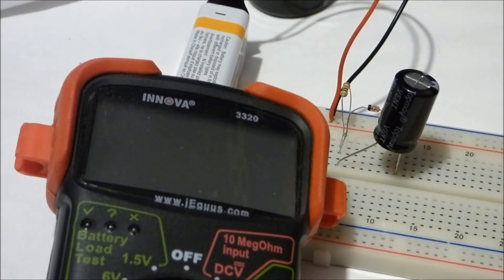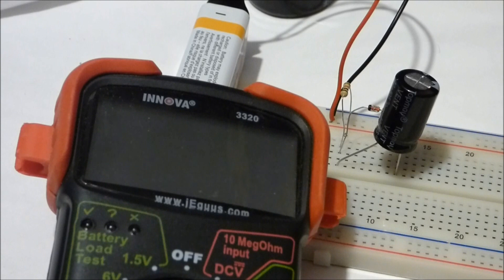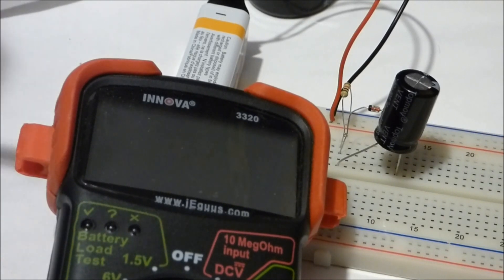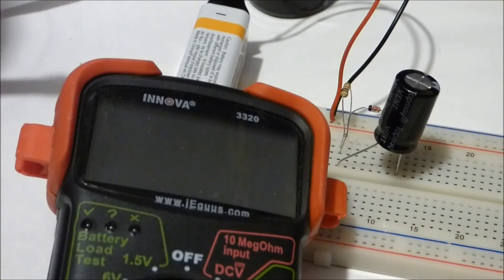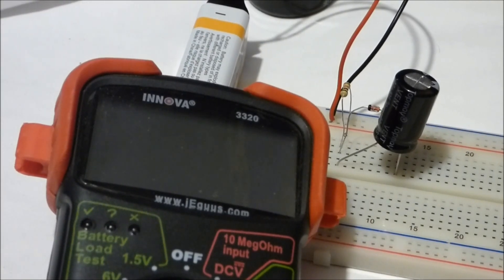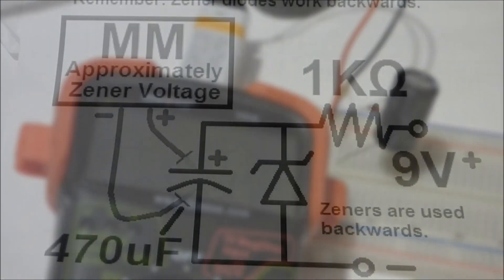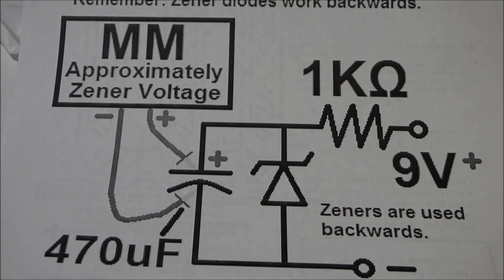So right now all I can do is recommend that you use them in this direction with the negative towards the positive side of the power source, like I did with the last two that are working just fine. So to recap a little, the Zener diode is like the other diodes where it allows current to easily go through one way and it resists current going the other way.